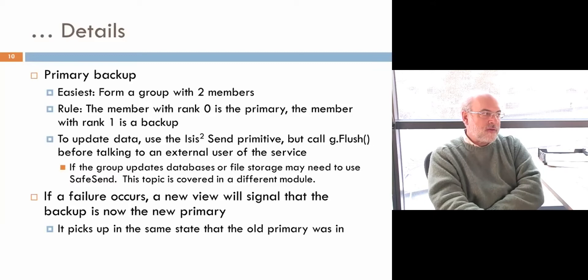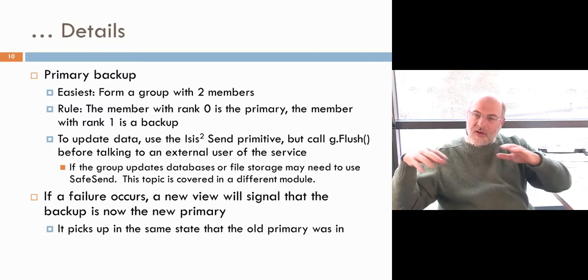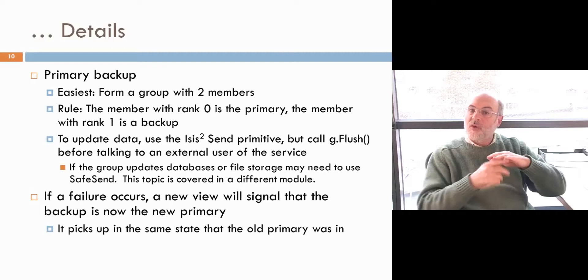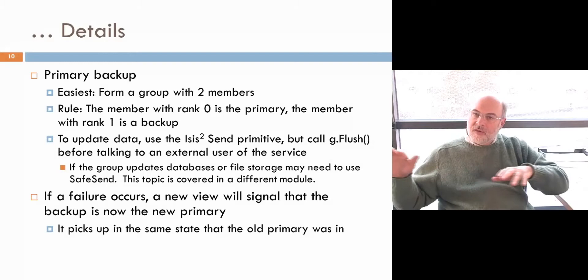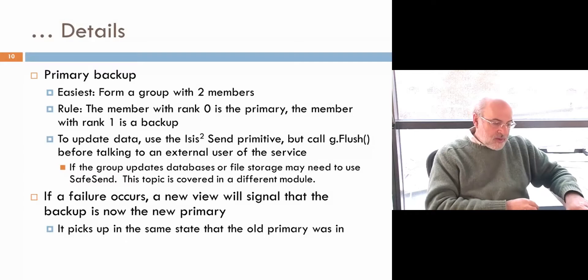Let's talk about primary backup replication first. The easiest way to do this is to form a group with two members. The rule would be that the rank zero member, the leader, is the primary, and the rank one member is the backup watching the state of the primary. When the group manages some sort of state, such as what we're working on or a request, you have to make sure that any request reaching the leader gets replicated across the members before the leader starts to perform actions on it. That way the backup — or backups, if you have more than two members — are in the same state. Then when the leader has finished, it says I'm done doing that task, and the backup knows and can mark that the task has been completed. If the leader crashes, the backup knows what it was currently doing at the time it failed. The new view event that comes through tells you that.